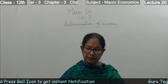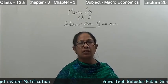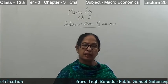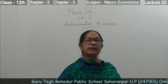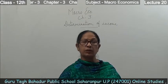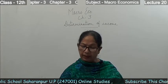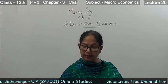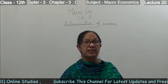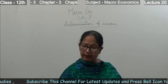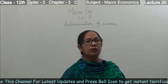Good morning students. Today we are going to start a new chapter — chapter 3 of macroeconomics — that is determination of income and employment. Every country in the world wants to achieve its possible maximum level of national income and employment. This chapter deals with how equilibrium level of income, output, and employment can be achieved if the economy is at underemployment level.